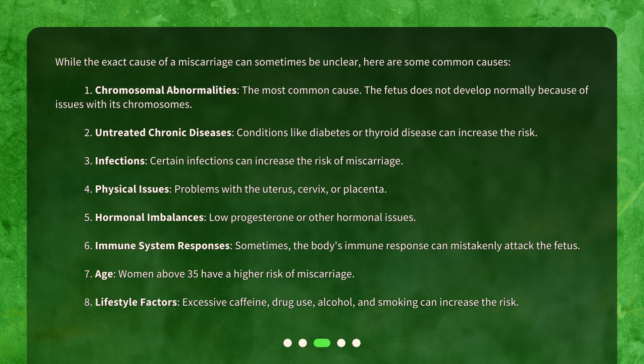Four: physical issues — problems with the uterus, cervix, or placenta. Five: hormonal imbalances, such as low progesterone or other hormonal issues. Six: immune system responses, where sometimes the body's immune response can mistakenly attack the fetus. Seven: age — women above 35 have a higher risk of miscarriage.